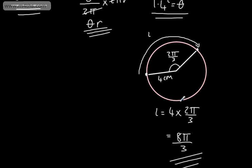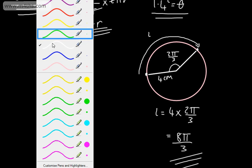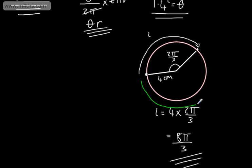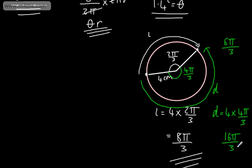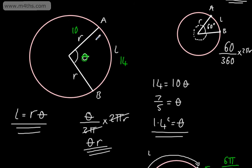If we wanted to find the length of the major arc — the bigger one — we consider the missing angle. Angles around a point sum to 2π, or 6π/3, so the major arc angle is 4π/3. The distance D for the major arc is 4 multiplied by 4π/3, giving 16π/3. Nice and straightforward.